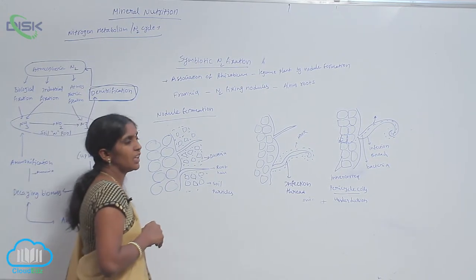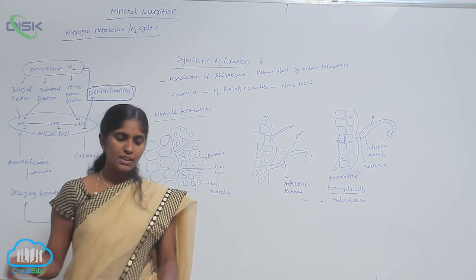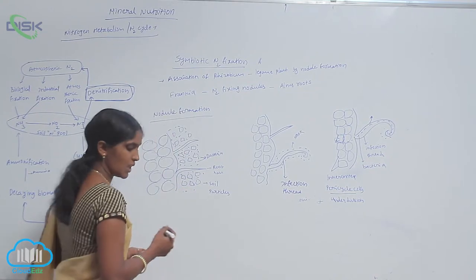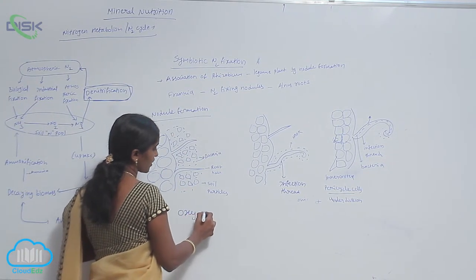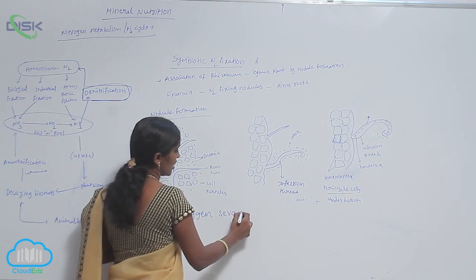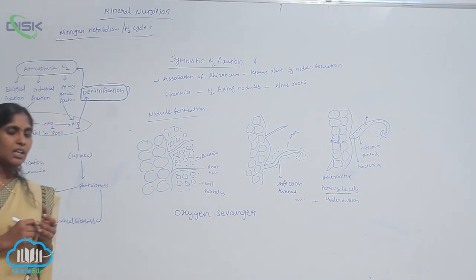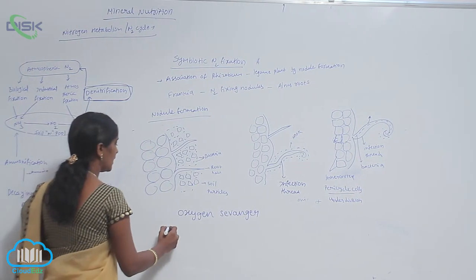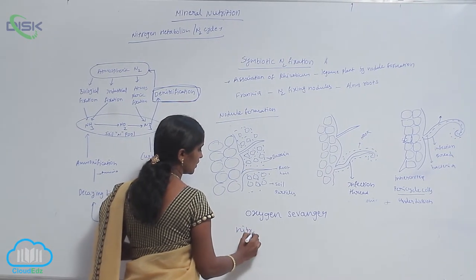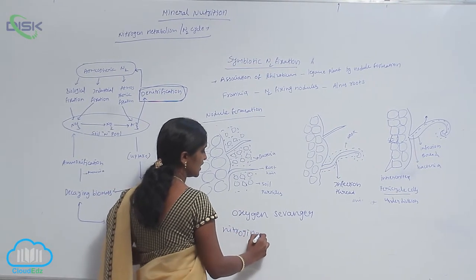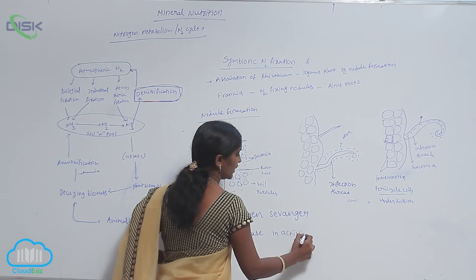What is leghemoglobin? Leghemoglobin is a chemical substance used as an oxygen scavenger. In the presence of oxygen, the nitrogenase enzyme activity is inhibited or inactivated.